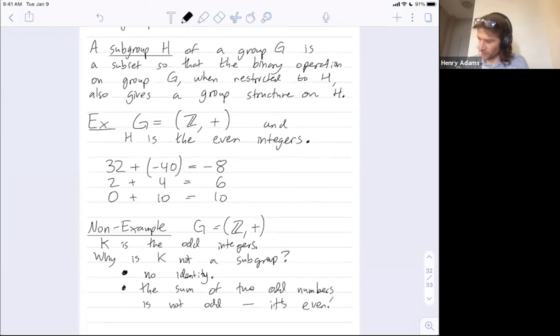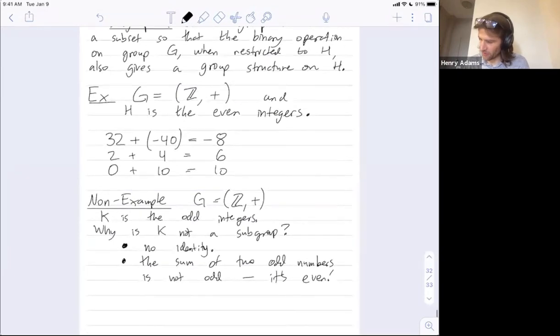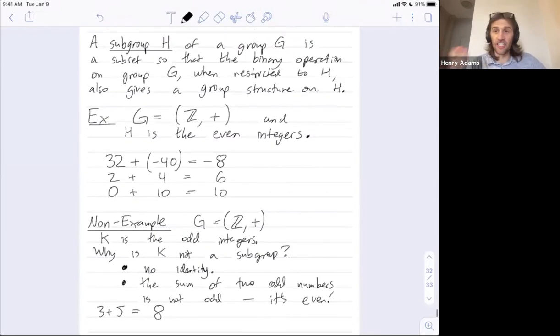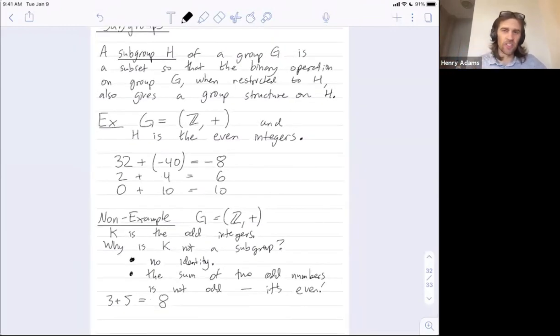So when I look at three plus five, I don't get another element of K back. I get back eight, which is even. It's not odd. So this is the main problem, right? The binary operation on G, the integers, when restricted to K, it doesn't even give a binary operation. You can't combine two odd integers by adding them and get another odd integer. You get an even integer back.